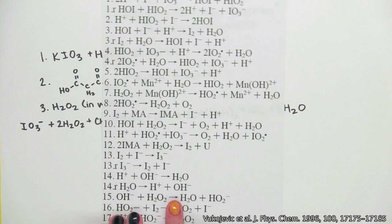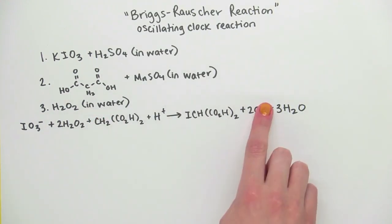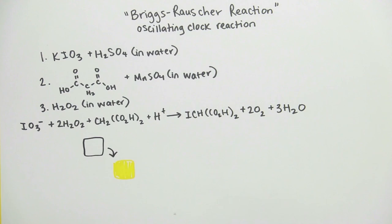Here are the many sub-reactions that occur to get from the reactants to the products. What we see is a cycle from colorless to amber to dark blue.